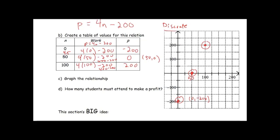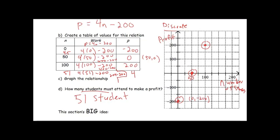In part D, we're asked how many students must attend to make a profit. Our profit is represented on the y-axis. As soon as profit gets above zero, we start making a profit. We know that at 50 students our profit is zero, so just over 50 would do the trick. We can try 51 students: 4 times 51 minus 200 is 204 minus 200, giving us $4 profit. So we're making $4 per additional student.